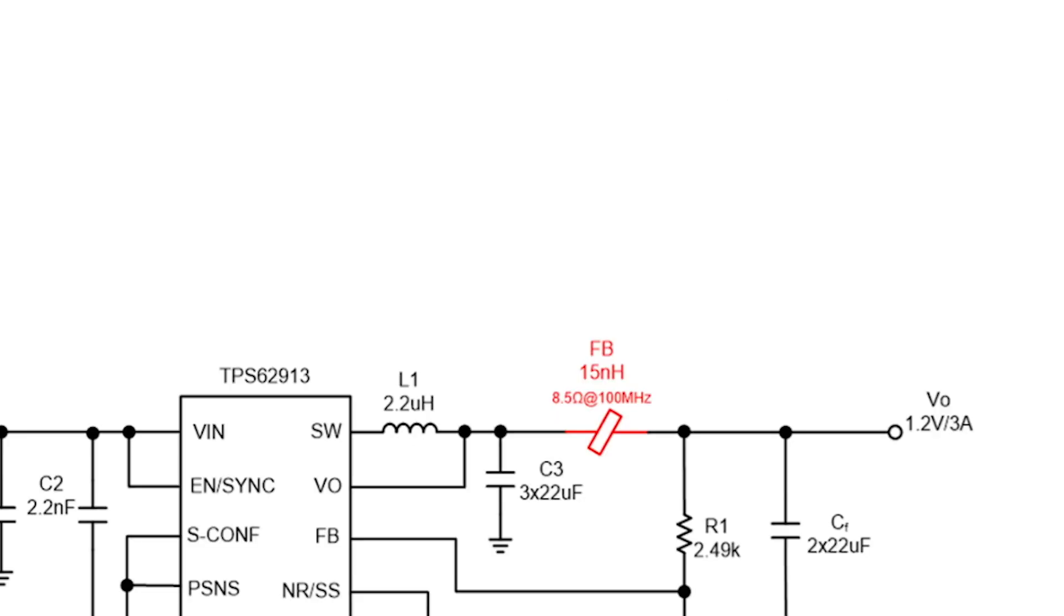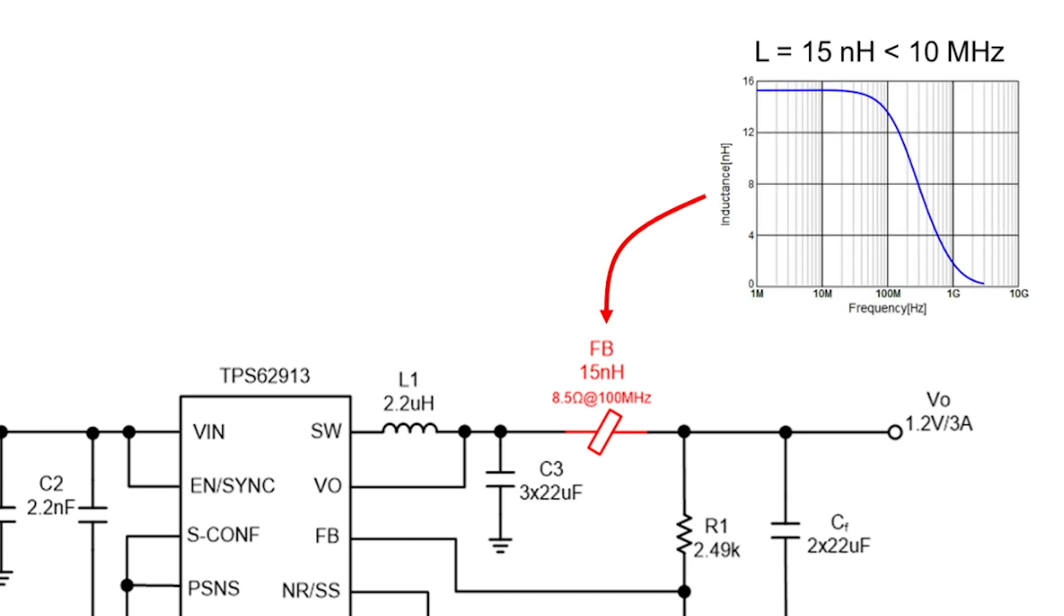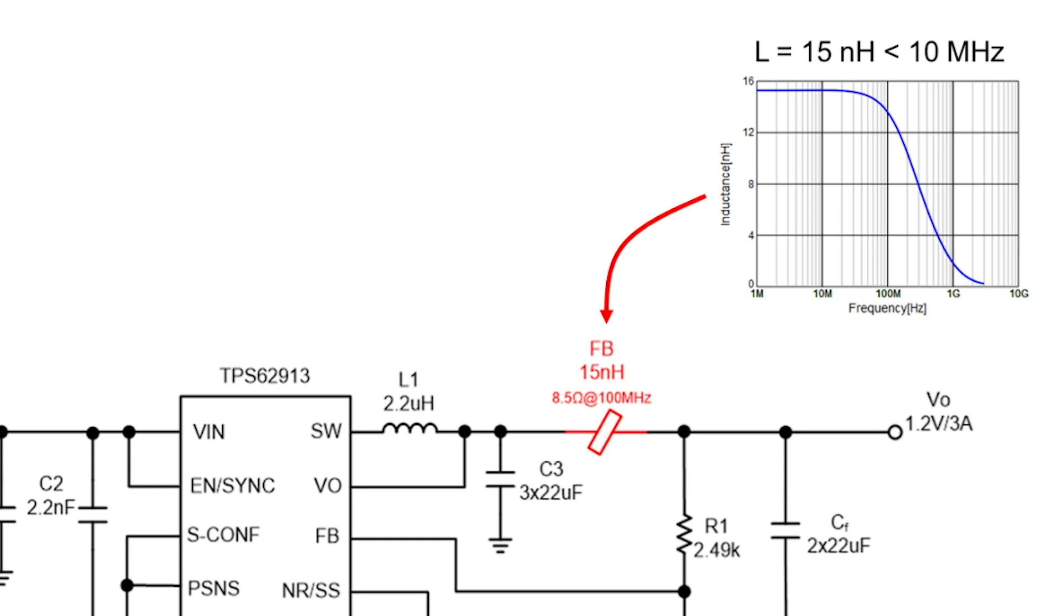The ferrite bead actually serves two purposes: providing the low frequency filter inductance of typically 50 nH, and attenuating the high frequency noise above 50 MHz.